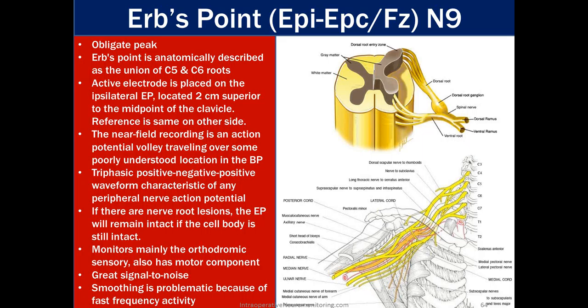Smoothing is problematic for ERBs point because of its fast frequency activity — this is a common exam question. If asked which waveform is most affected by smoothing, the answer is the peripheral ERBs point, not cortical or subcortical. ERBs point is used to verify adequate stimulation: when it no longer increases in size, you've reached maximal stimulation — then go about 10% higher.